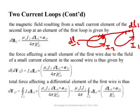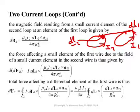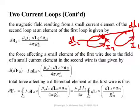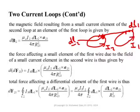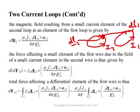We actually need two integrals — two line integrals. The first gives us the differential force affecting one element in the first wire due to another element from the second wire. Then we find the total force on that element due to all elements of the second wire, which involves a line integral. To get the total force on the first wire we integrate over the first wire as well, ending up with a double summation.